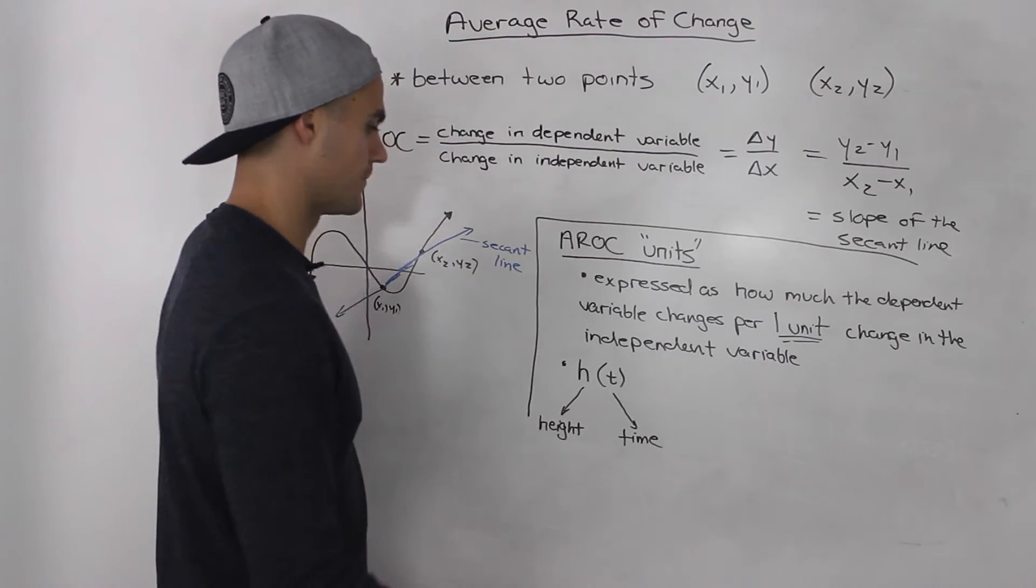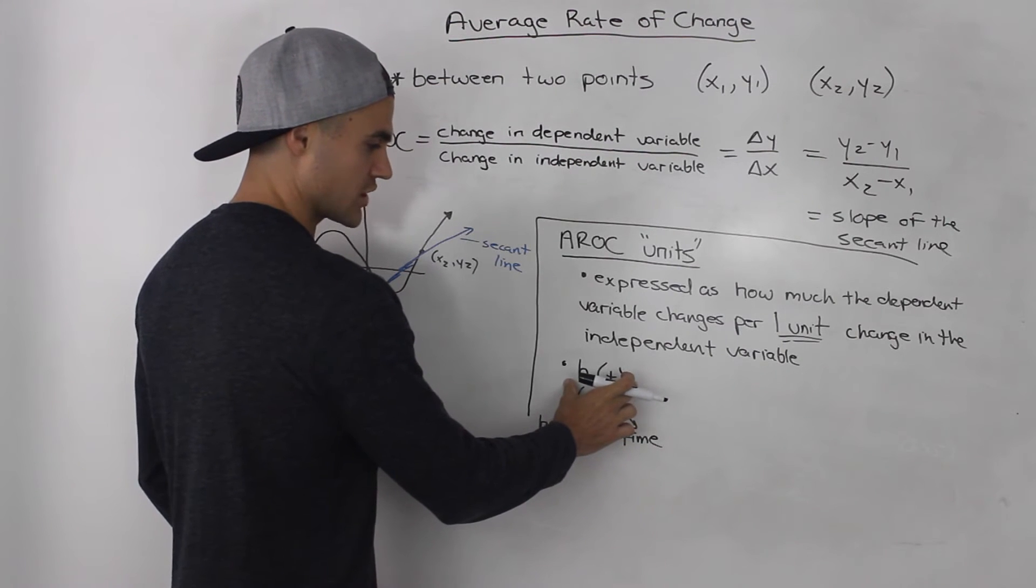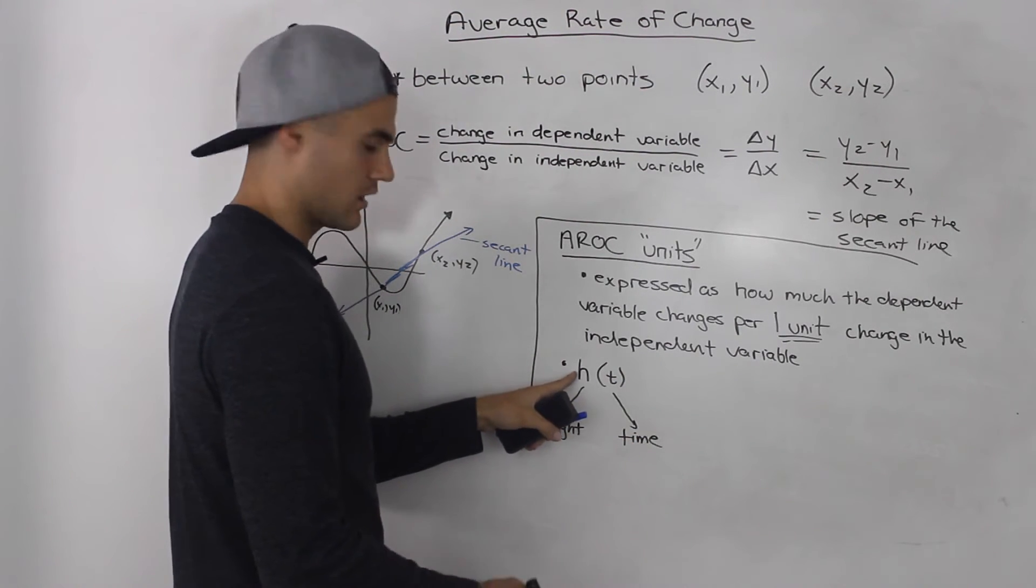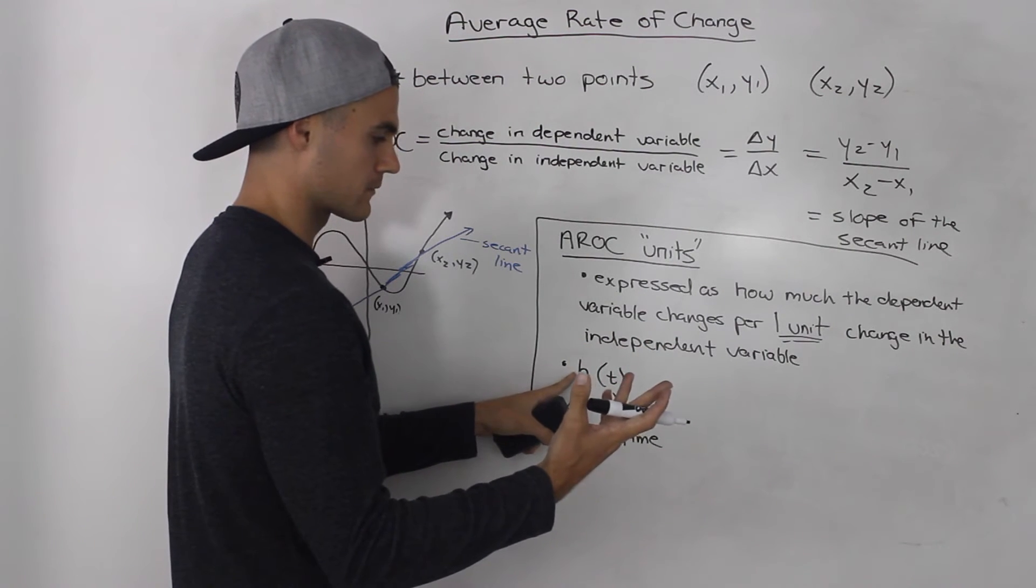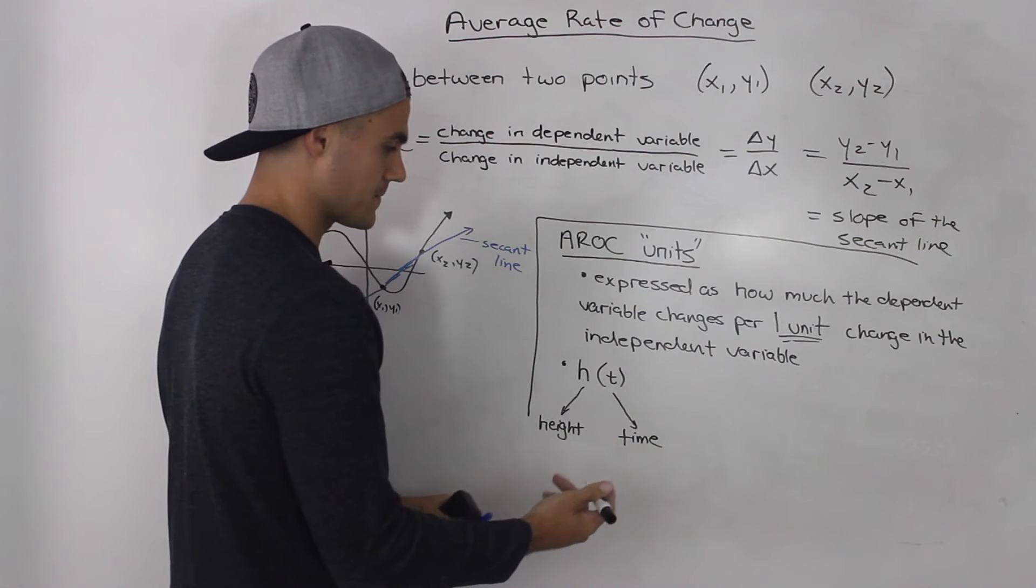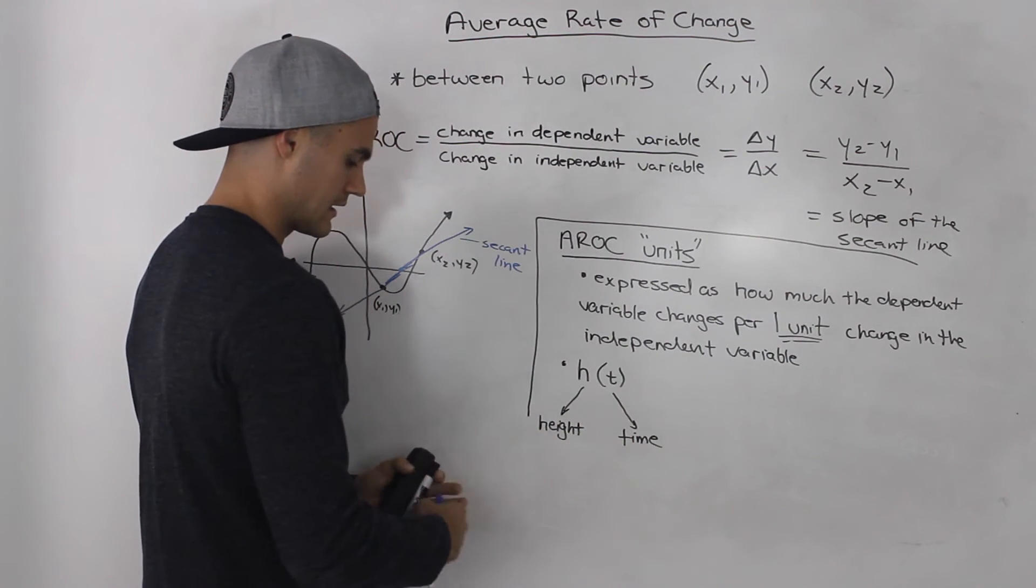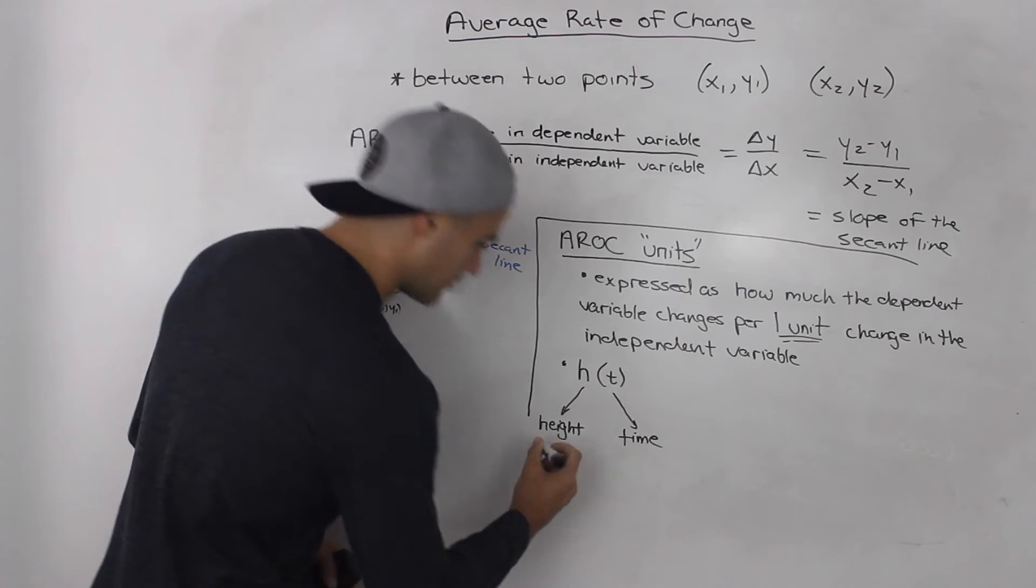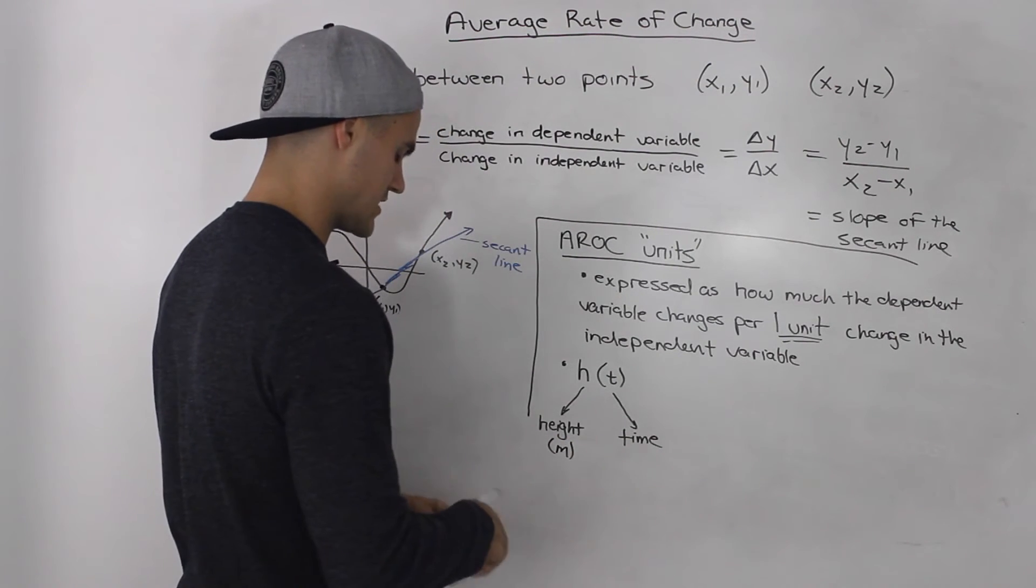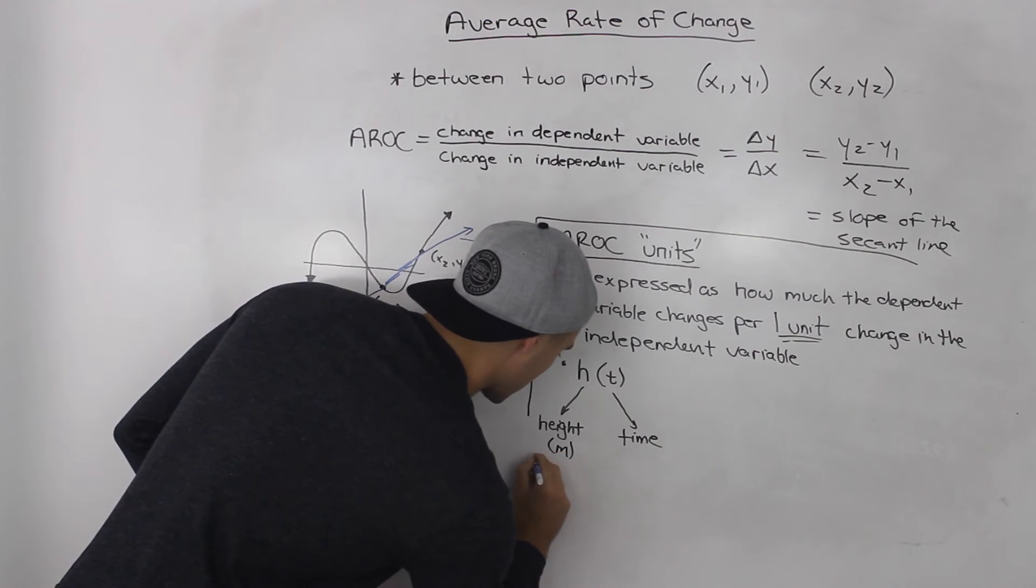For example, if we have a function h(t) where we're modeling the height of, let's say, a soccer ball in terms of time from when it's kicked, then the height, measured in meters, would be the dependent variable.